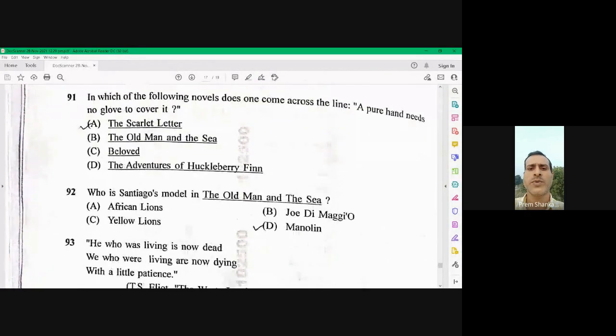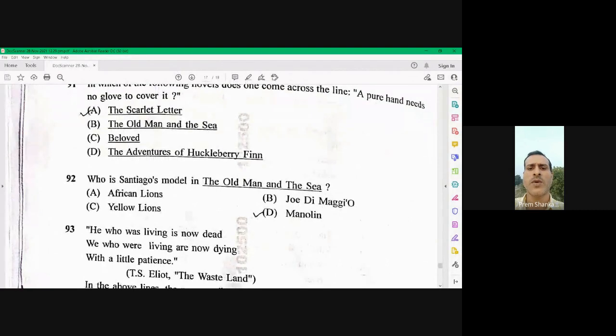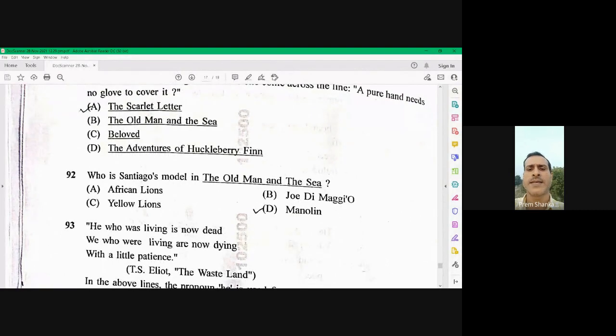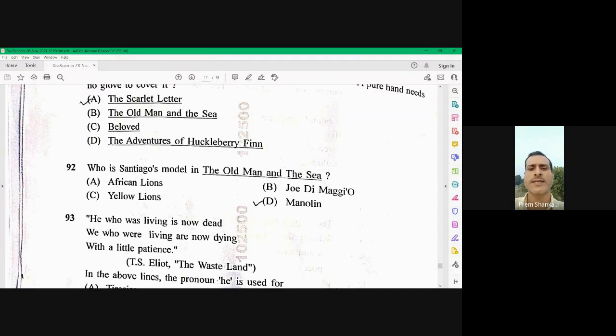Question number 92. Who is Santiago's model in the old man and the sea? The old man in the sea, the Santiago's model is his assistant Manolin. So 92. D is the right option.